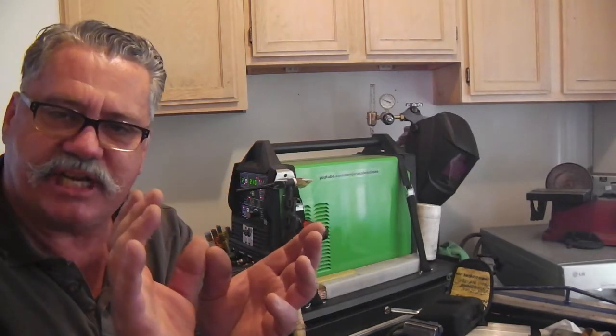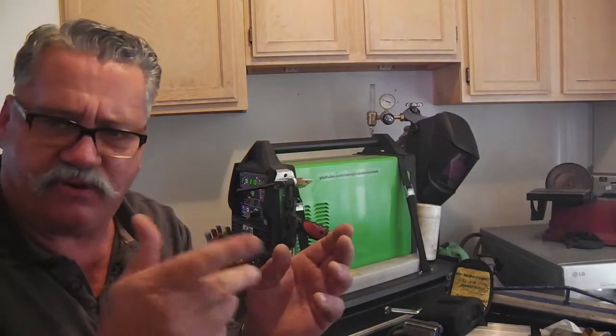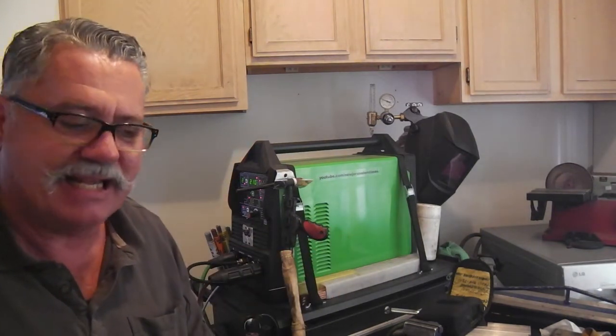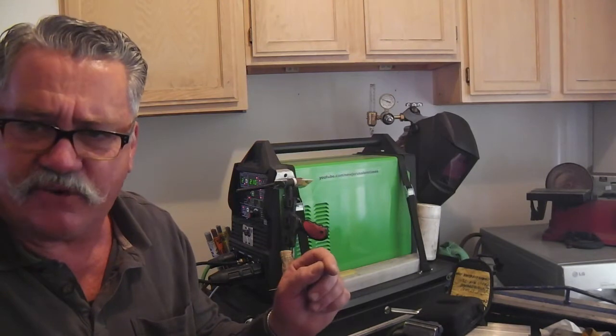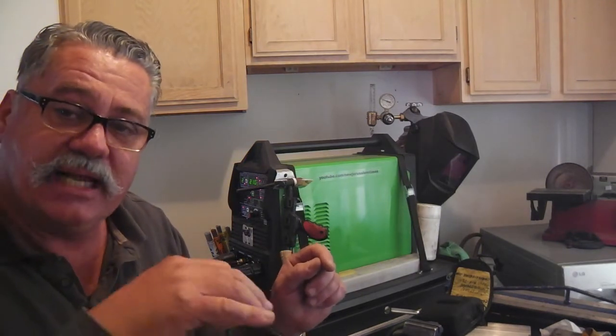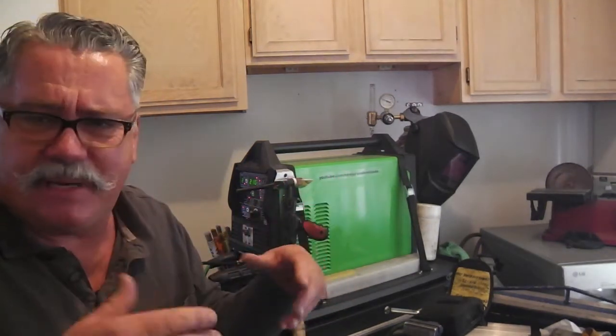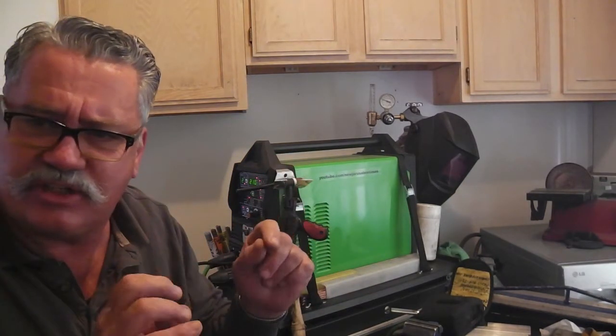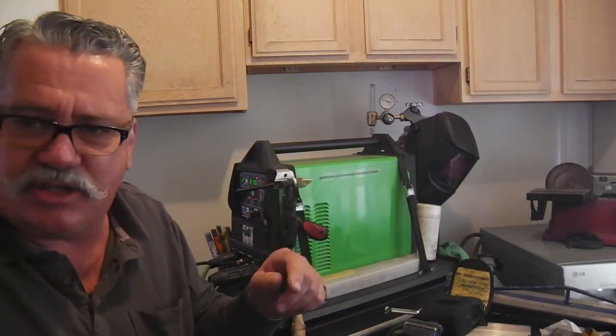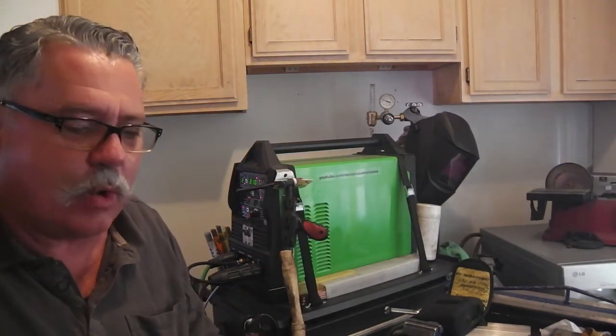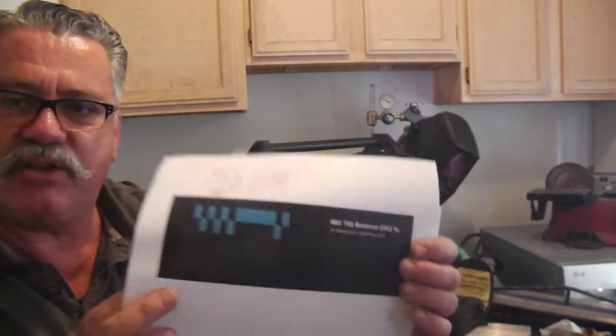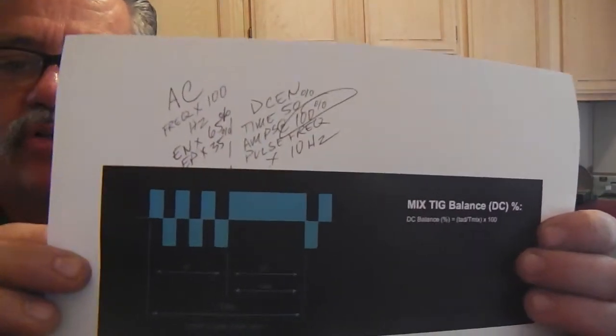Half the time is on AC, half the other time is on DC EN, which is usually for ferrous metals. But DC EN is known to have better penetration, and I believe that's where TIG welding first began, on DC using helium. You're just going to have to suffer that because it's an advanced feature, and it's not very well understood.